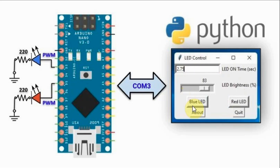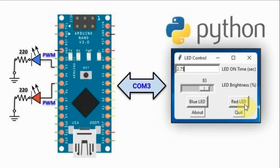In this next example we want to design a Python GUI to control the on and off of two LEDs connected to pulse width modulated pins D3 and D5 of the Arduino. The GUI has an input field to enter the LED on time in seconds — for example 2.75 seconds — so when we click on the blue LED it will be on for 2.75 seconds and then turn off. A slider indicates the brightness level in percentage, with 100 as maximum and 0 as minimum. An about button provides more information about the software, and a quit button exits the program.